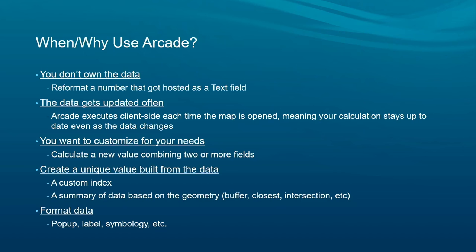Arcade is really useful, especially when you don't own a dataset. How many times have you found a neat dataset where a numeric field is instead a text field and now you can't map it? Traditionally you'd have to beg the data owner to change the schema. But with Arcade, you no longer have to do that — you have the ability to transform data on-the-fly within the browser, within the map. It's also very helpful when data is updated often, because every time you open the map, the Arcade expression executes on-the-fly, so the map stays up-to-date.